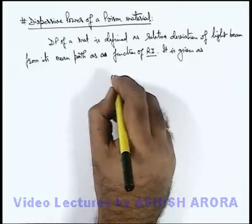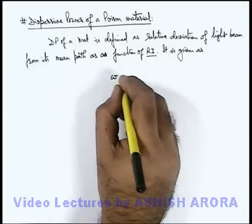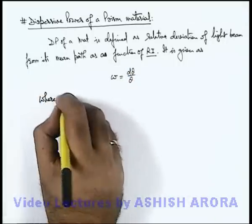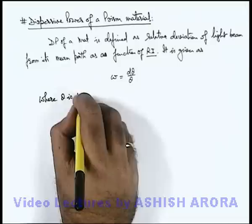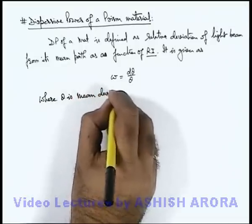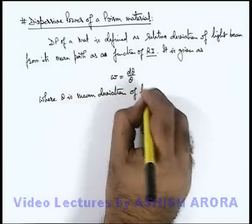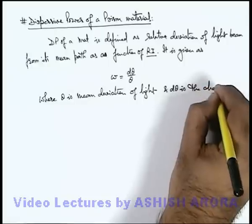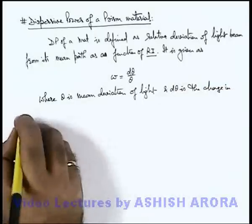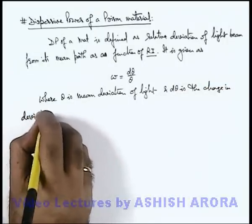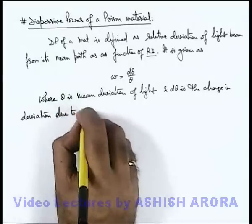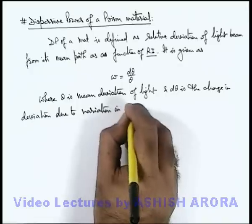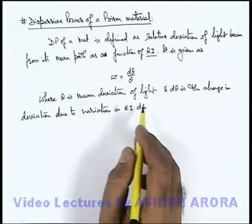And here it is written as: dispersive power is denoted by the symbol omega, written as dθ/θ. Here we can write where θ is mean deviation of light, and dθ is the change in deviation due to variation in refractive index, dμ, if μ is the refractive index.